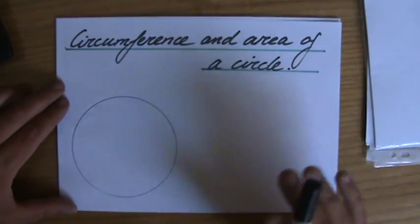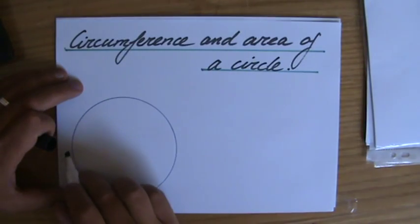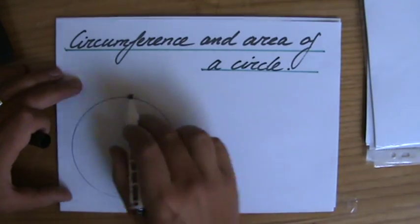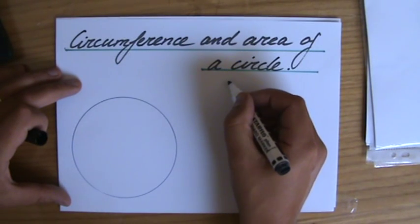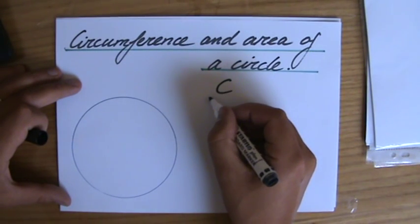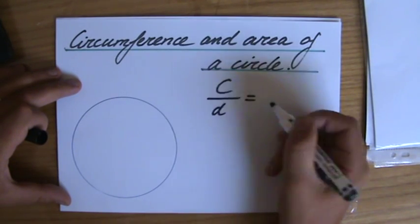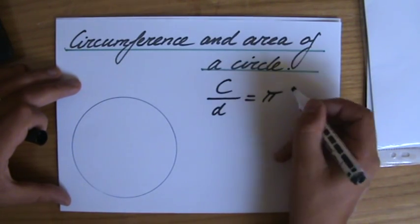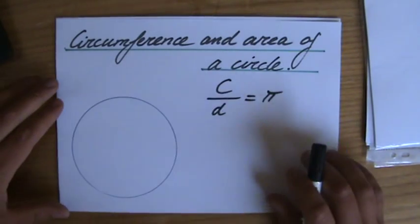I've shown you what pi is, which is the relationship between the diameter of a circle and its circumference. We have seen that if we have the circumference of a circle and we divide that by its diameter, we get pi. So make sure you have seen my previous video before you continue with this one.